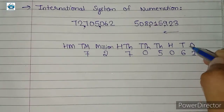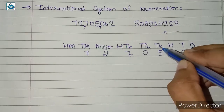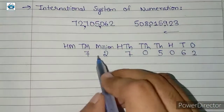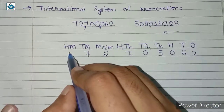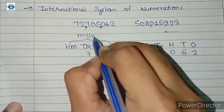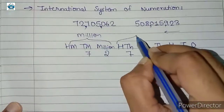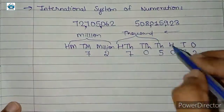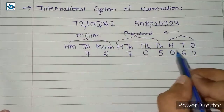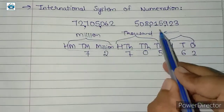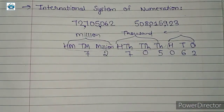Once again, we have ones, tens, hundreds, thousands, ten-thousands, hundred-thousands, million, ten-million, and hundred-million. We can group them like this: ones group, thousands group, and millions group. That is why we use commas after every three digits in the international system of numeration.